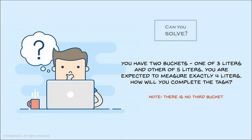Before we dive in and start going through the questions one at a time, we're going to start with some of the logical kind of concepts that come up in a lot of interviews. In this one, you have two buckets — one of three liters and the other of five liters. You're expected to measure exactly four liters. How will you complete the task? Note: you only have the two buckets, just the two buckets.